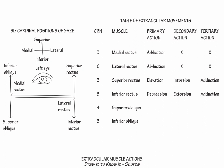Next, show that the superior oblique's primary action is intorsion, its secondary action is depression, and its tertiary action is abduction. Finally, show that the inferior oblique's primary action is extorsion, its secondary action is elevation, and its tertiary action is abduction.